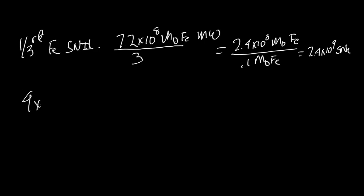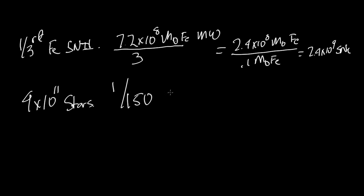The Milky Way has in total about 4×10¹¹ stars. The average star in the Milky Way has formed but not yet died, so most stars have very long lifetimes. Of the 4×10¹¹ stars in the Milky Way, 2.4×10⁹ have to undergo supernovae — that's about 1 in 150 stars currently in the Milky Way. We can ask ourselves: is that reasonable?